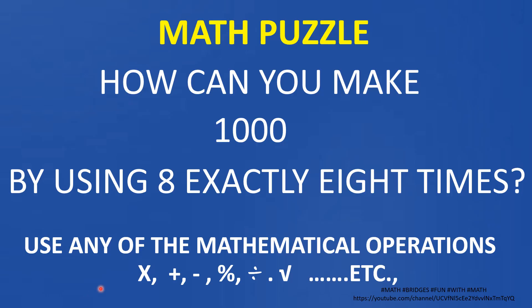The puzzle is: you have to use 8, exactly 8 times, and get the answer as 1000. That means, how can you make 1000 by using 8 exactly 8 times? You can use any mathematical operations you know — addition, multiplication, subtraction, division, square roots, anything. But use 8 only 8 times and get 1000.